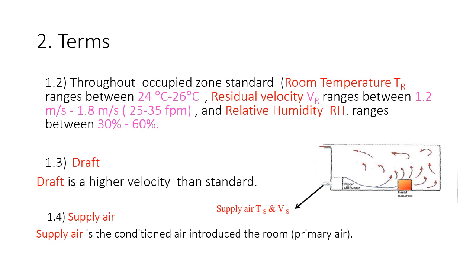What is draft? Draft is air movement that has a higher velocity than the standard range of 1.2 to 1.8 meters per second. Whenever air movement exceeds 1.8 meters per second, we consider that velocity as draft, and the air movement can be called a draft.